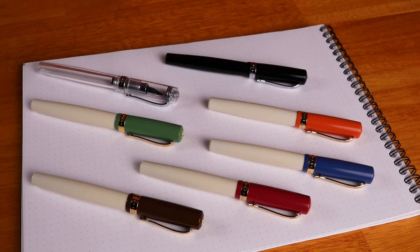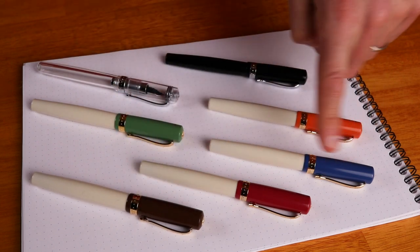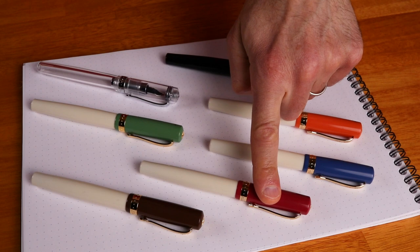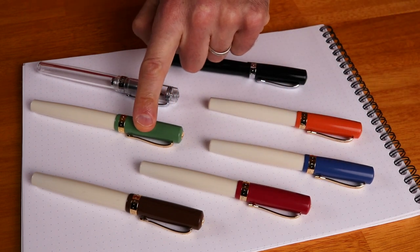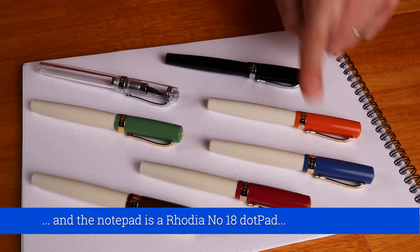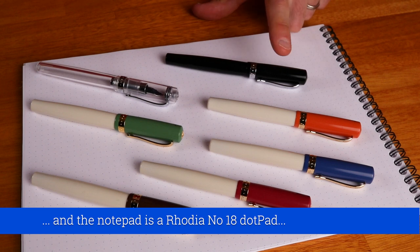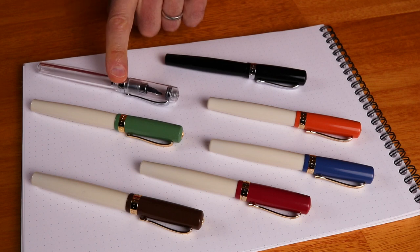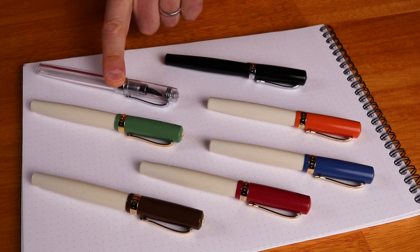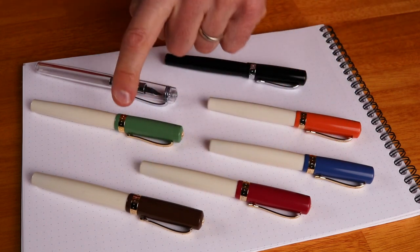Here are the pens in all their color and glory: 20s Jazz with the brown cap, 30s Blues with the red cap, 50s Rock with the blue cap, 60s Swing with the green cap, 70s Soul with the orange cap, the transparent demonstrator, and the black Student at the back. One thing to notice is that the black and transparent Students have silver chrome trim, while the other pens have gold trim.